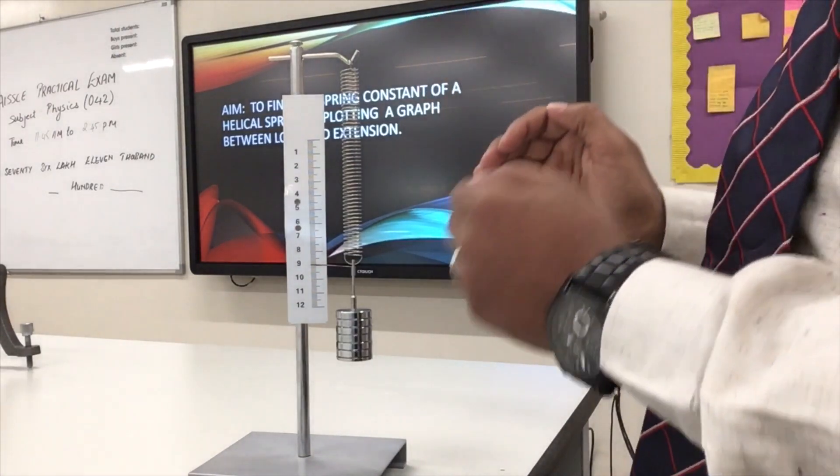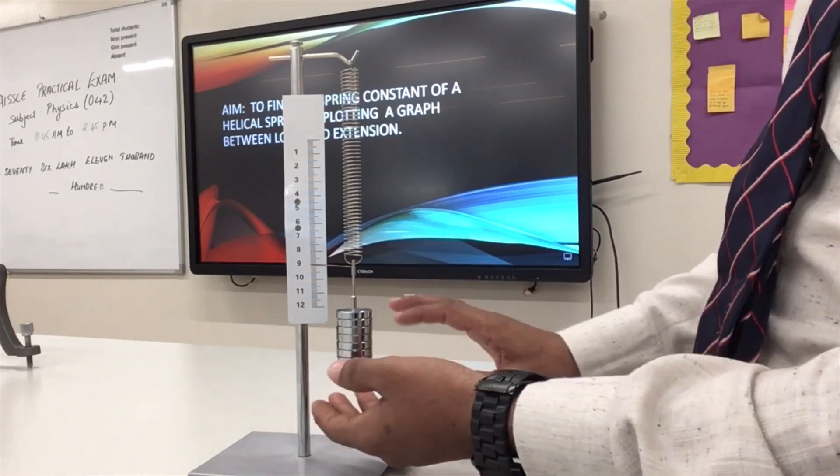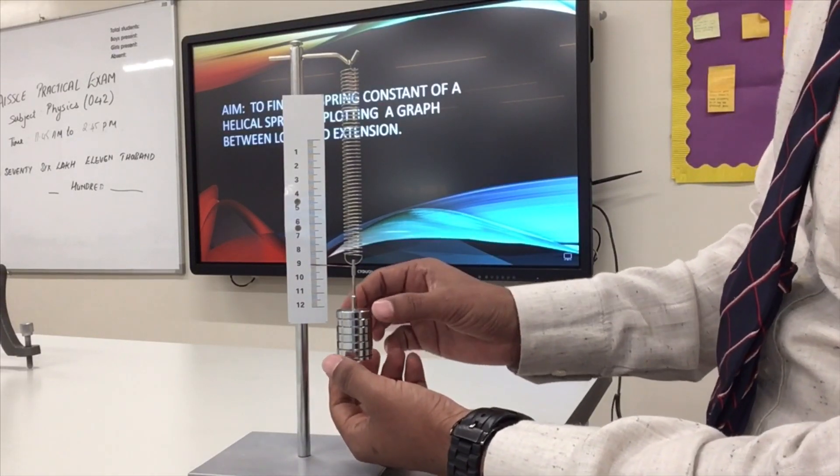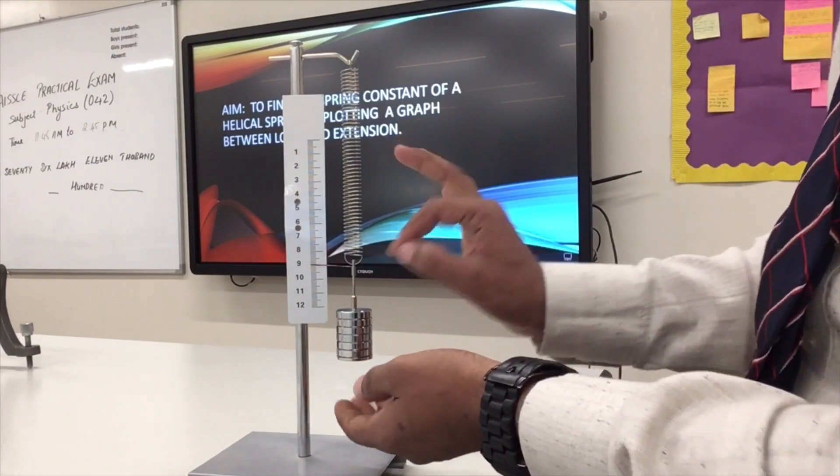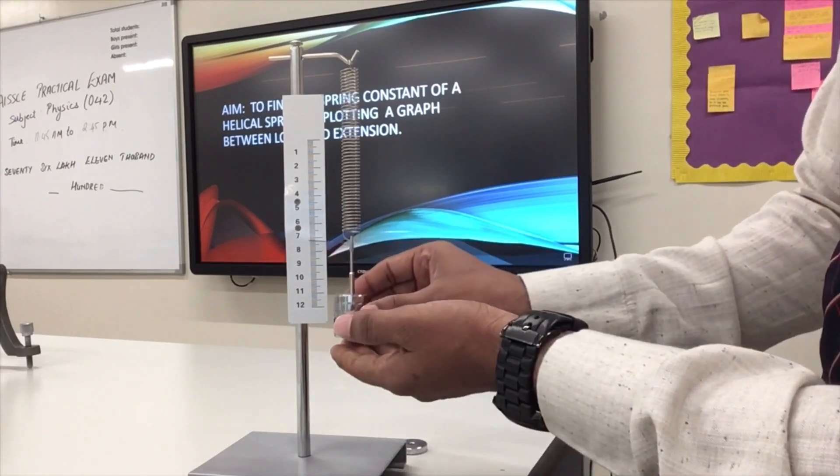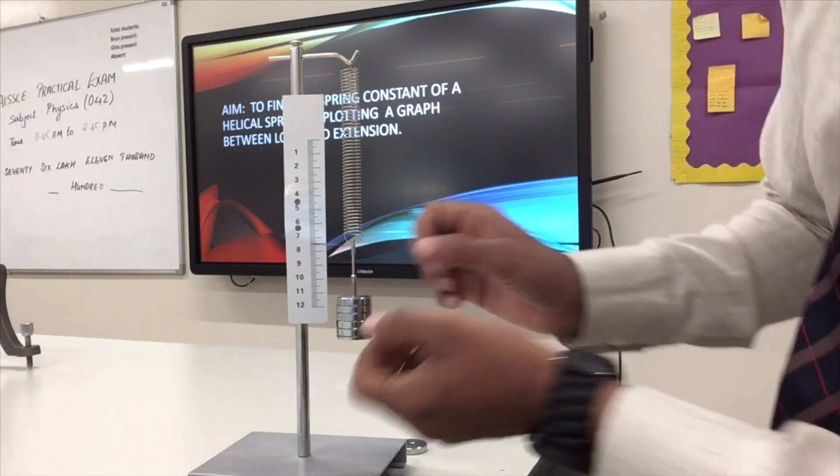So these recordings are recorded in the loading part. Now similarly the unloading part, I'll start recording it from the bottom level. You will see in the table the last reading remains the same for loading and unloading. Now I'm removing one and it goes to the unloading part. So it is 7.5 centimeter.